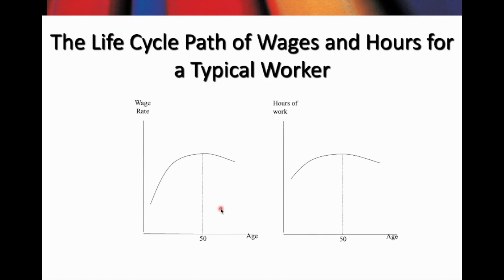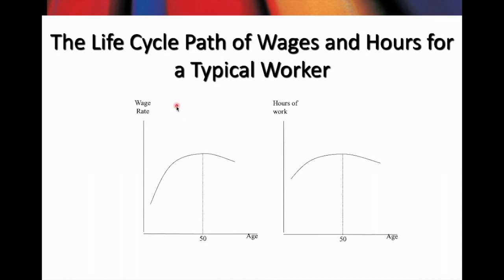Here we have two diagrams to understand the life cycle path of wage and hours for a typical worker. The left side diagram is sometimes referred to as the age-earning profile. The vertical line is labeled wage rate and the horizontal line measures the age of the worker over the life cycle. On the right side diagram, the vertical line measures hours of work while the horizontal line measures the age of the worker. Between these two diagrams, only the horizontal line measures the same indicator — the age of the worker — however the vertical lines differ.